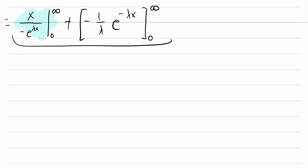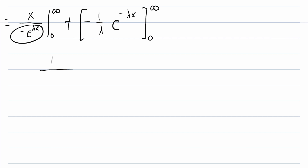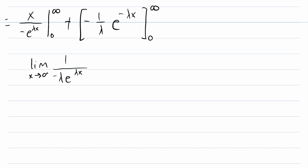The trickier piece is evaluating x over e to the lambda x as x goes to infinity. The numerator approaches infinity and the denominator approaches negative infinity — that's an indeterminate form. We can use L'Hôpital's rule: the derivative of x is 1, and the derivative of negative e to the lambda x is negative lambda times e to the lambda x. As x approaches infinity, that denominator grows without bound, so the whole expression approaches 0.